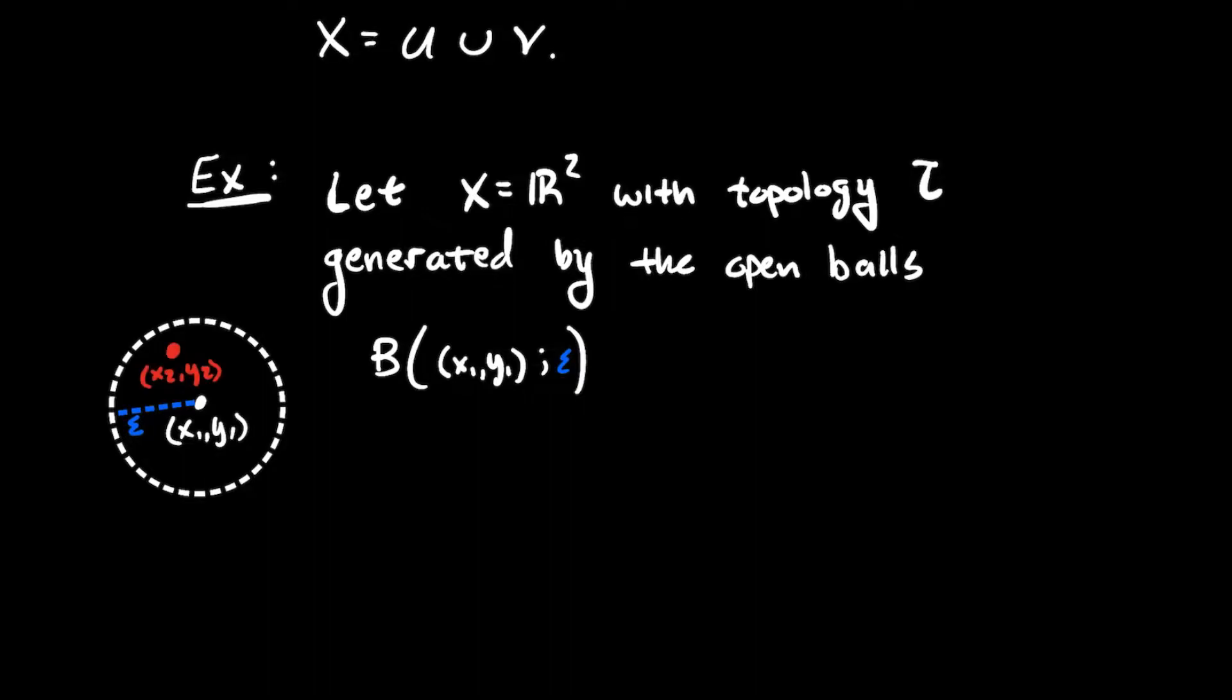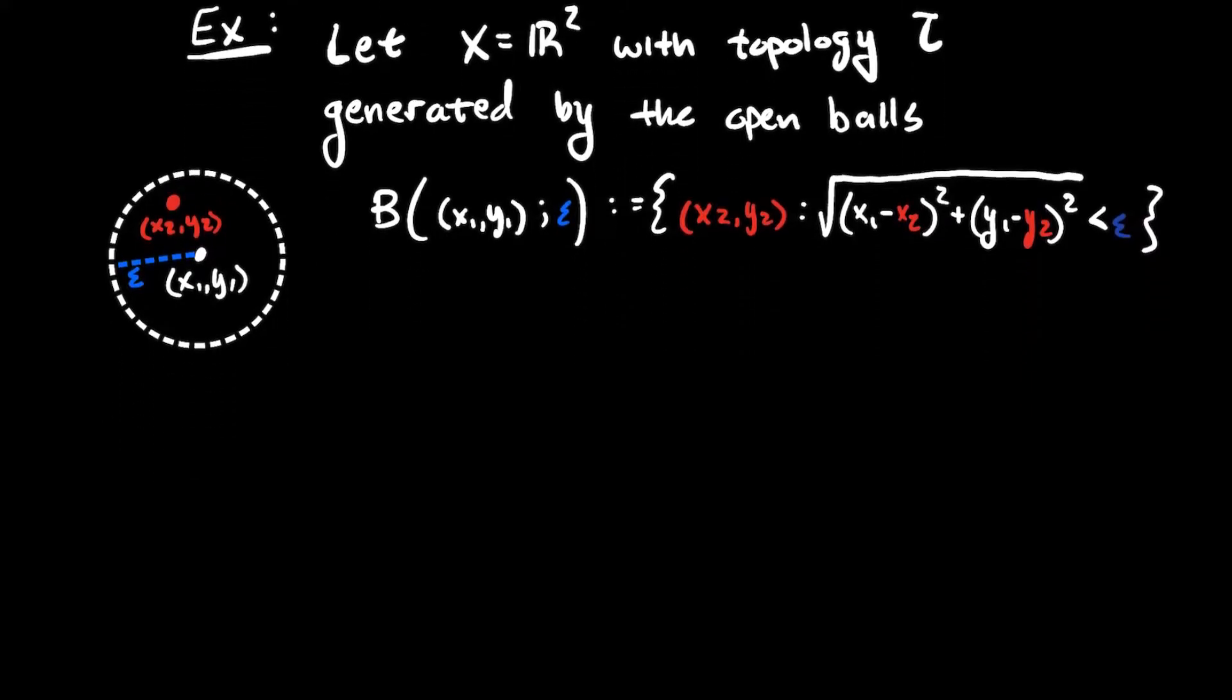But that's my notation for what a ball centered at x1, y1 of radius epsilon looks like. But just so we're all crystal clear, what is it? A point like x2, y2 is in this ball. That means that its Euclidean distance, your good old distance function from college algebra, the distance between those points, of course, is less than this number epsilon. So that's the definition of what a ball is.